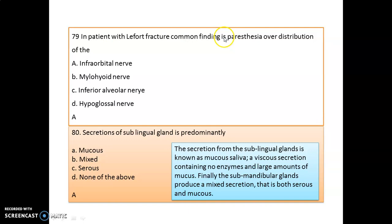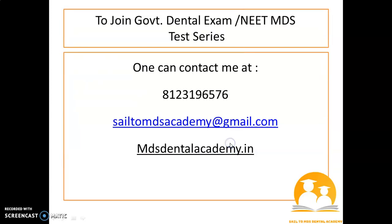In a patient with a Le Fort fracture, a common finding is paresthesia in the distribution of the infraorbital nerve. The sublingual gland gives mucous secretion — the secretion from the sublingual gland is known as mucous or viscous secretion, containing no enzymes and a large amount of mucus. The submandibular gland produces mixed secretion — both serous and mucous in nature.